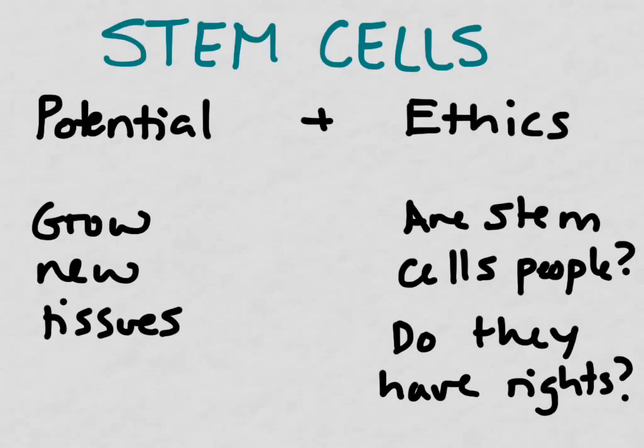If the zygote could ultimately become a person, is it already a person? And if it's already a person, should those cells have rights? At what point does it become alive? And at what point does it acquire the rights of a human being?